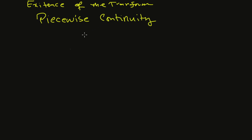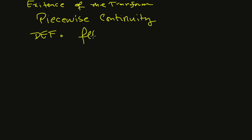This is relevant when exploring whether the transform exists or not. Piecewise continuity: a function f of t is said to be piecewise continuous on a finite interval if f of t is continuous at every point in the interval, except possibly for a finite number of points at which f has a jump discontinuity.